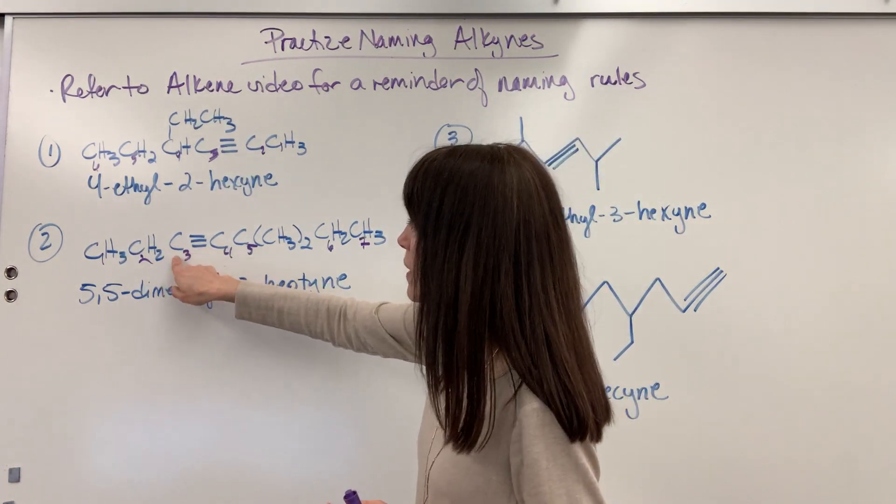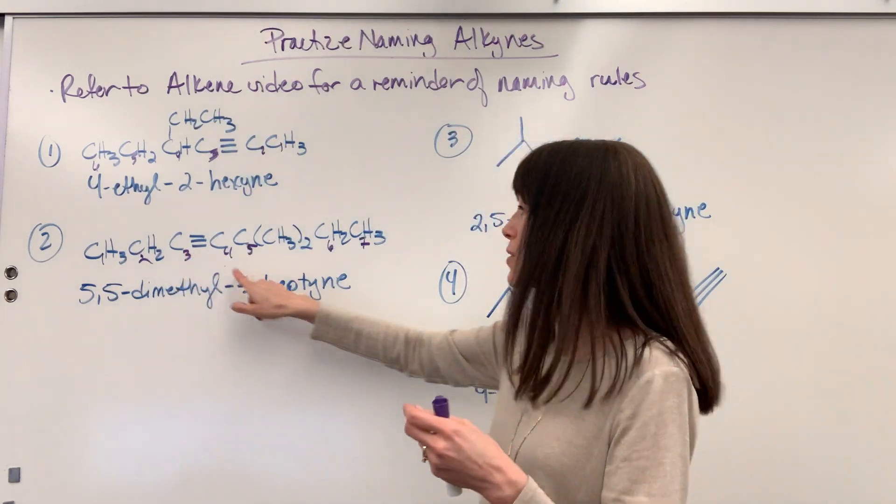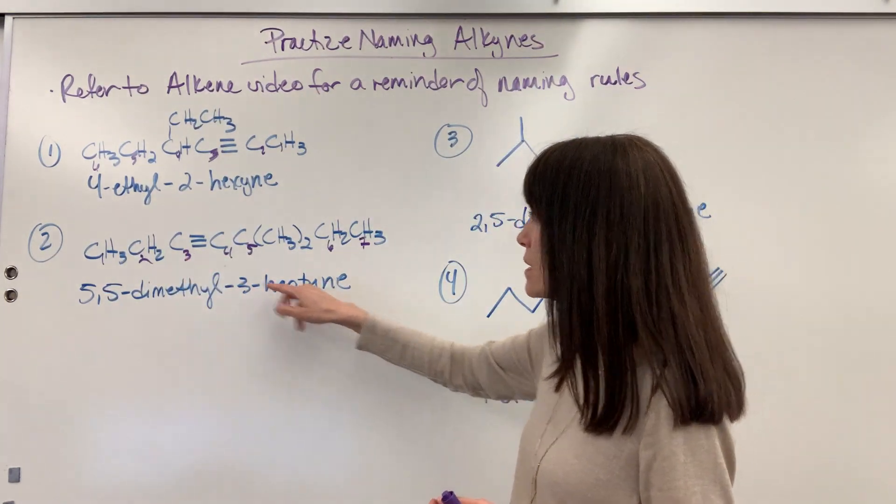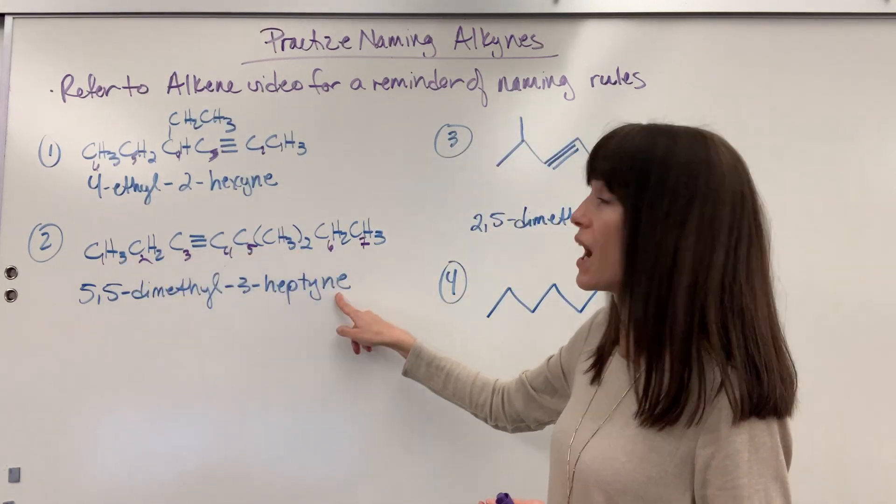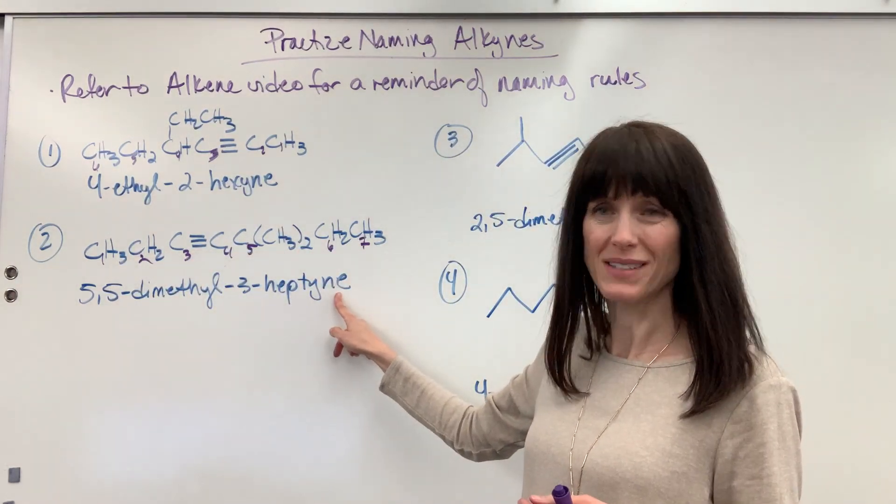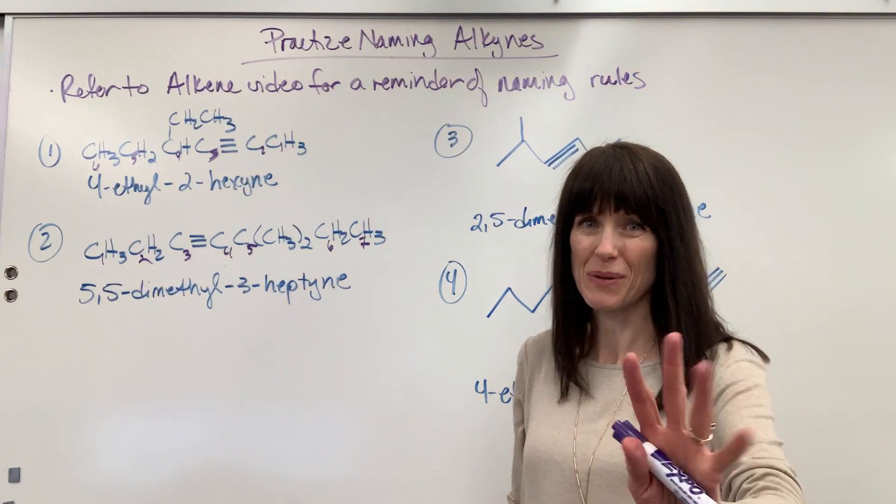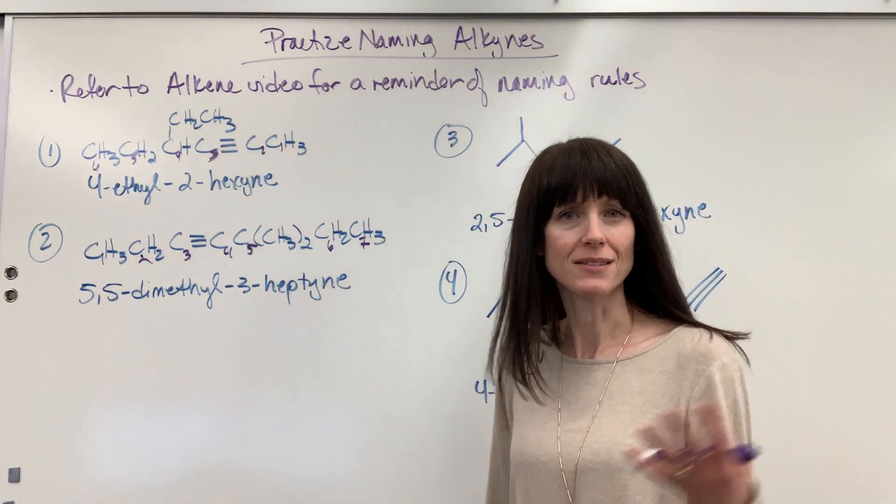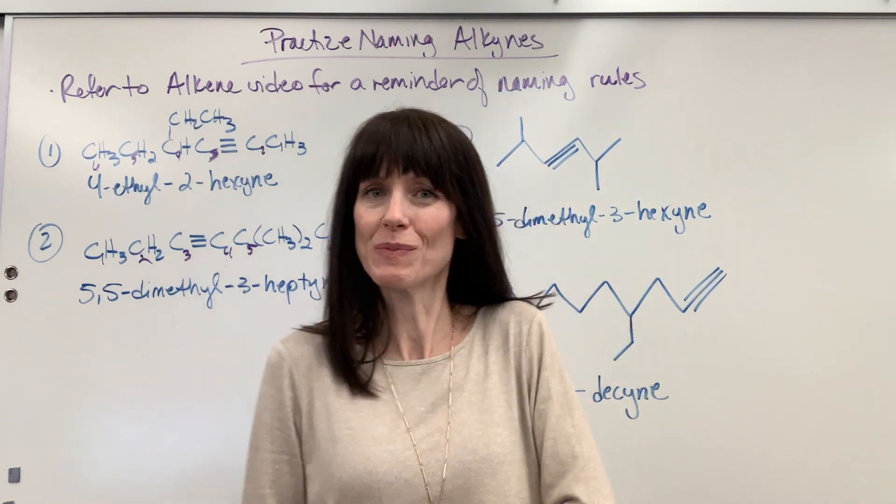And then our triple bond very first touches carbon number three. So three hept for seven carbons, ine, that there's a triple bond touching that third carbon. Let's read it one more time. Five, five, dimethyl, three heptine. Man, do you sound smart? Yes, because you are smart.